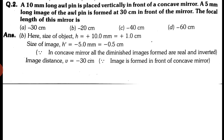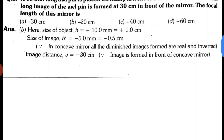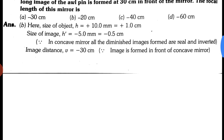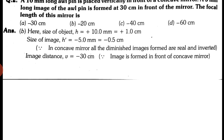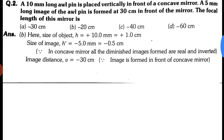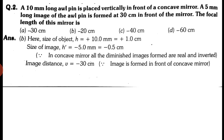We have h given, h-dash given, and v given. Next step: write all formulas — 1 by f equal to 1 by v plus 1 by u; f equals r by 2; and magnification is h-dash divided by h equals minus v by u. Let's see what we can find.